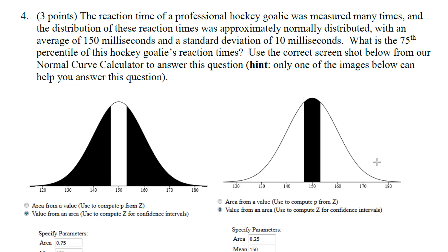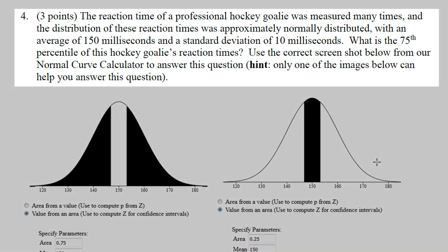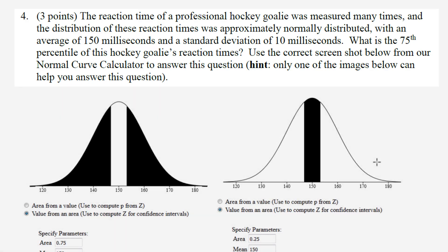Question number four is over the normal curve again, and there are some key tips to getting these questions right on the test. We want to find the 75th percentile of the hockey game goalie reaction times on a curve that has a mean of 150 and a standard deviation of 10.